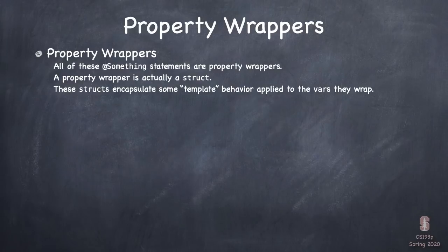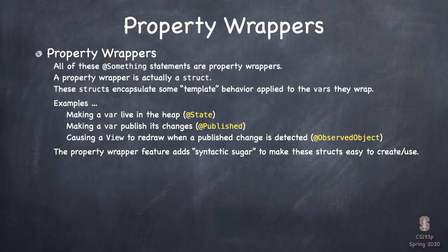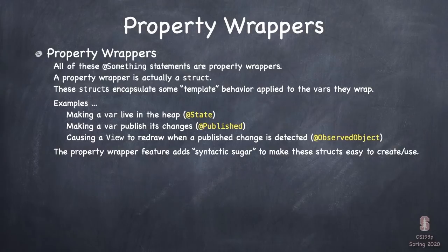Let's talk about property wrappers — these are the @-sign somethings you're seeing: @State, @Published. This thing is actually a struct, and that struct has code in it that applies some kind of template behavior to all the vars that they wrap. Property wrappers is a feature in the Swift language that adds some syntactic sugar to make these structs really easy to use in your code.